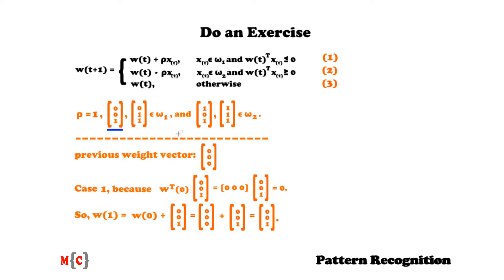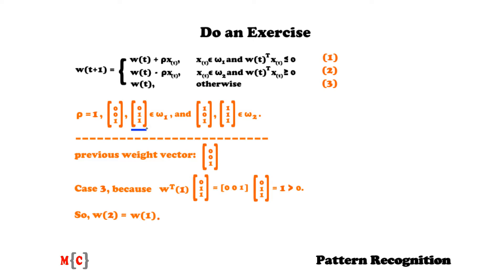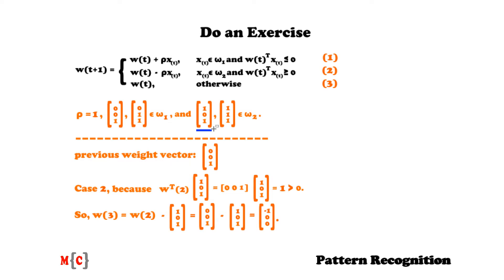Now we go to the second iteration with our second training vector from omega1. We check whether case 1 applies by multiplying the previous weight vector with the training vector. The outcome is 1, which is greater than 0, so we are in the otherwise case (case 3) and keep our previous weight vector. In the next iteration, we take our next training vector, which belongs to omega2. We do the multiplication and get a value equal to 1, which is greater than 0, so case 2 holds. We perform a correction: from our previous weight vector we subtract the current training vector, resulting in the vector (-1, 0, 0).